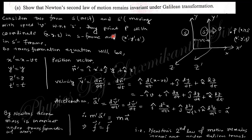In Einstein's theory of relativity mass is variant, but here the mass is invariant. So m' = m, which means a' = a, and therefore F' = F. Newton's second law — force is the same with respect to these two frames — so Newton's second law of motion remains invariant under Galilean transformation. However, under Lorentz transformation (related to Einstein's relativity), Newton's second law is not invariant.